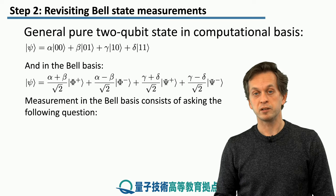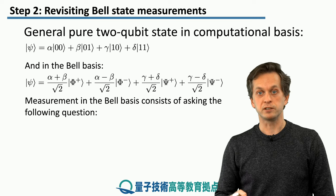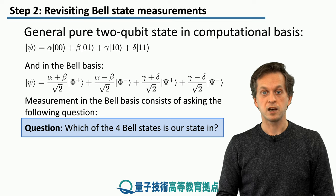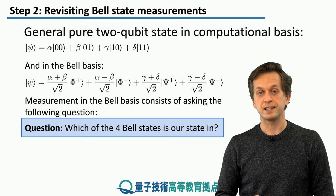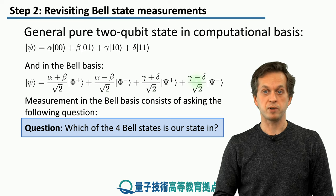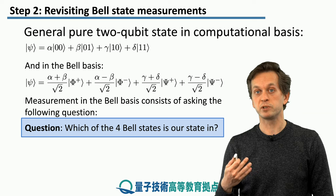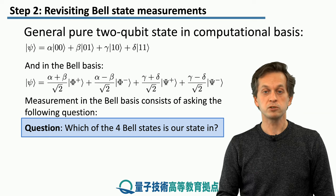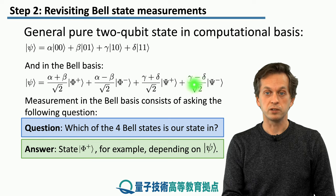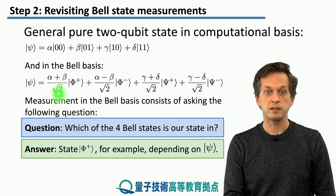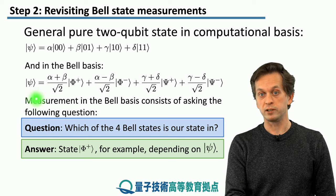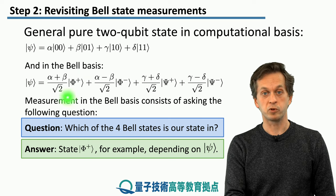We have been treating measurements as a question that we ask about the state of our physical system. The question in this case is: which of the four Bell states is our state in? Is it Phi plus, Phi minus, Psi plus, or Psi minus? This is what the measurement reveals. Usually we say we get the answer with some probability — for example, depending on the initial state Psi, we might get the answer that the state is Phi plus, with probability given by the modulus squared of the corresponding probability amplitude.